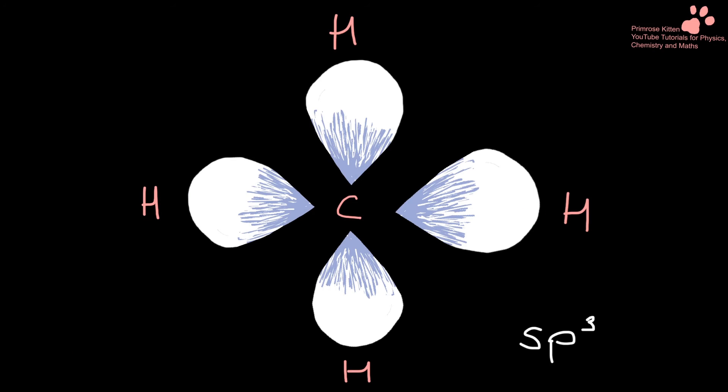Giving us four identical bonds around each carbon, which can then bond onto hydrogen, or whatever else it wants to bond onto.